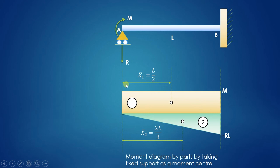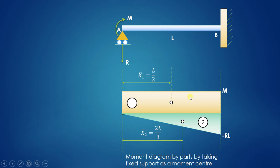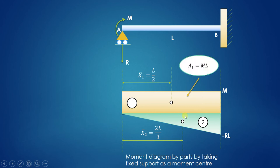Now we measure the distances of the centroid from point A, taking moments about point A. So X1 bar equals L by 2, because the centroid lies at the center of the rectangular portion. For the triangular portion, the centroid lies at a distance of 2L upon 3 from the apex. The area of the rectangle equals height M multiplied by base L, so A1 equals M into L.